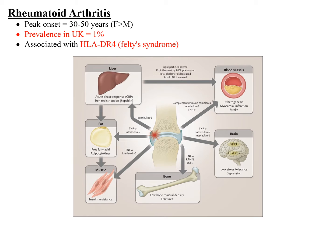Items shown in red indicate past exam questions. Pathophysiologically, rheumatoid arthritis involves consistent joint inflammation. Pro-inflammatory factors such as TNF-alpha and interleukin-6 are at higher levels, causing multisystemic involvement — changes in muscle, fat, brain, liver, and blood vessels. High levels of TNF-alpha within the joint space is one of the key pathophysiological mechanisms by which joint destruction takes place.